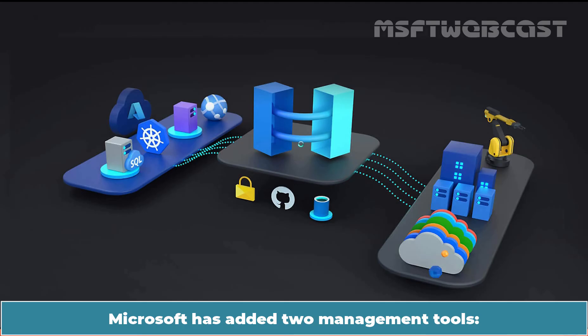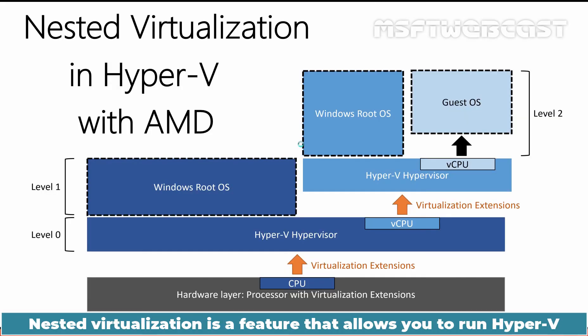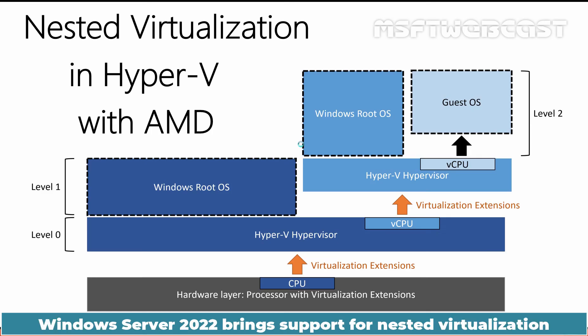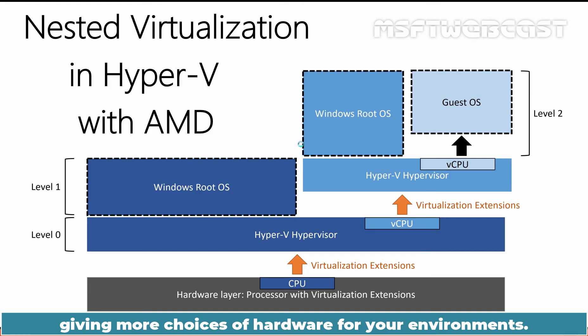Microsoft has added two management tools — Task Scheduler and Hyper-V Manager — for server core installation. Nested virtualization is a feature that allows you to run Hyper-V inside of a Hyper-V virtual machine. Windows Server 2022 brings support for nested virtualization using AMD processors, giving more choices of hardware for your environments.